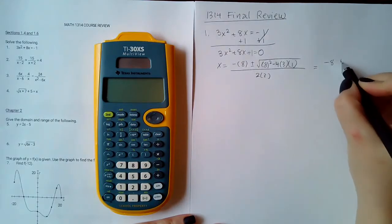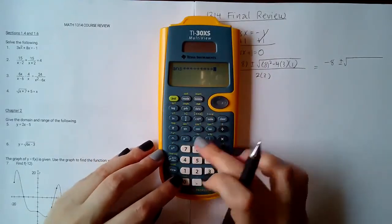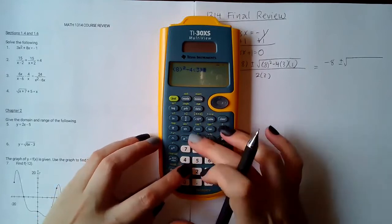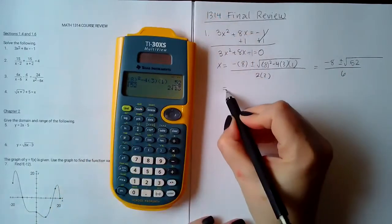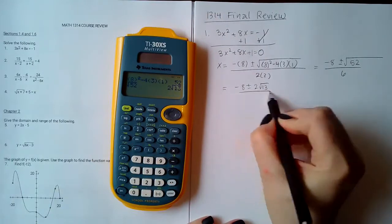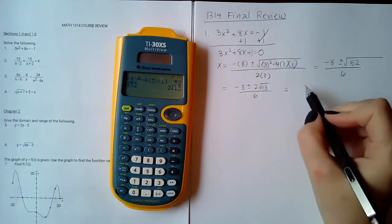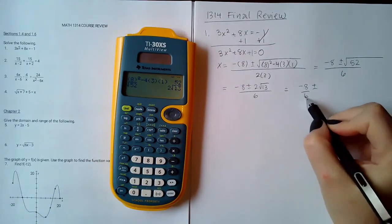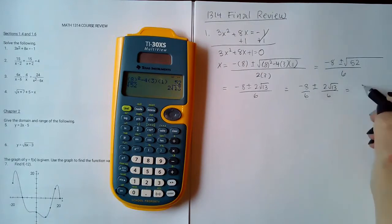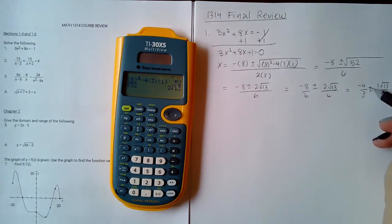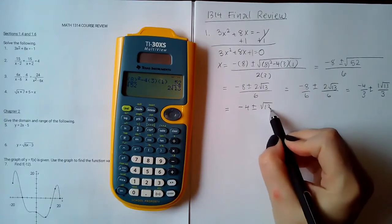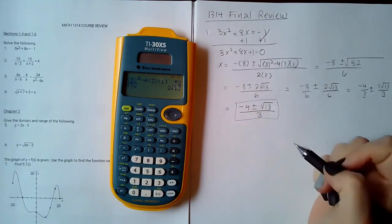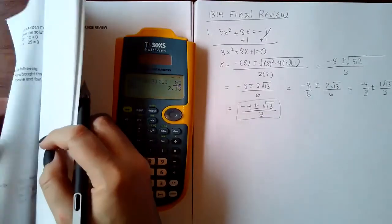So then I get negative 8 plus or minus — let's see — 8 squared minus 4 times 3 times 1 is 52, over 6. The square root of 52 is 2 square root of 13, and then I can simplify this. I can simplify to negative four-thirds and one-third, but you still have the square root of 13. The choices might actually have it as one fraction, and you don't need to write the invisible one coefficient, so the choices will probably look something like this.